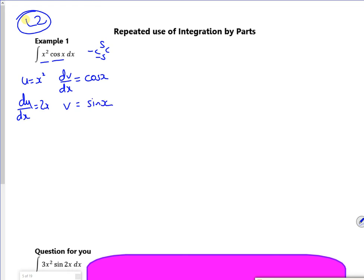Right, so now I'm going to put it into my formula. So uv, so x squared sin x minus the integral of 2x sin x dx. So here's my problem.